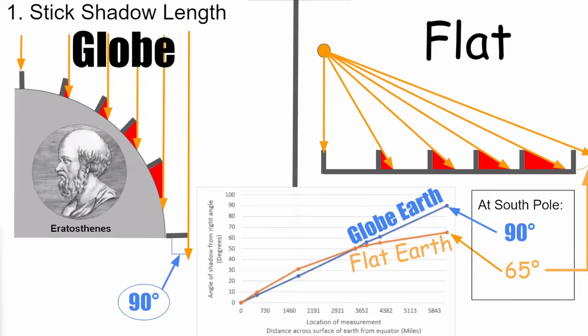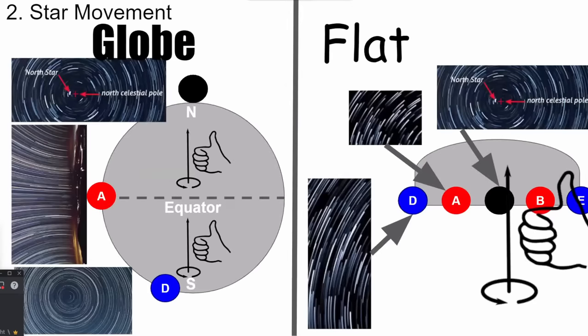The first point has to do with one of the most primitive proofs of a globe: the experiment from Eratosthenes. Both the globe and flat Earth agree that as you go up in latitude, a shadow increases its angle. The question is what trend that increase takes. The globe predicts a 90-degree angle at the pole — an infinite shadow — while on flat Earth it could never be 90 degrees. We observe infinite shadows near the poles, so the globe is correct.